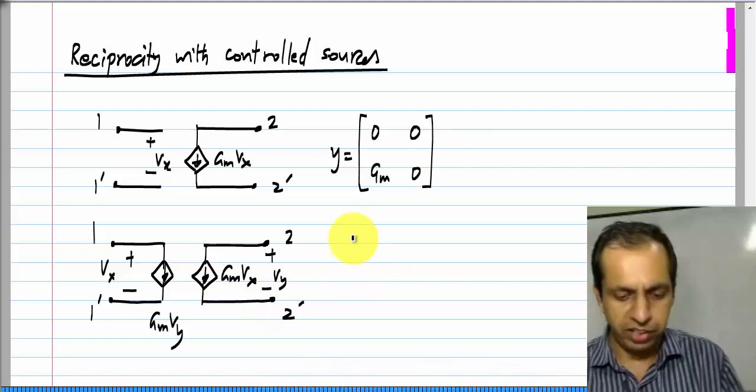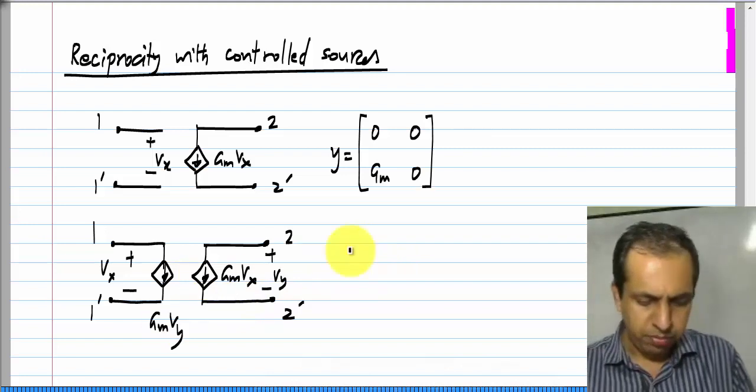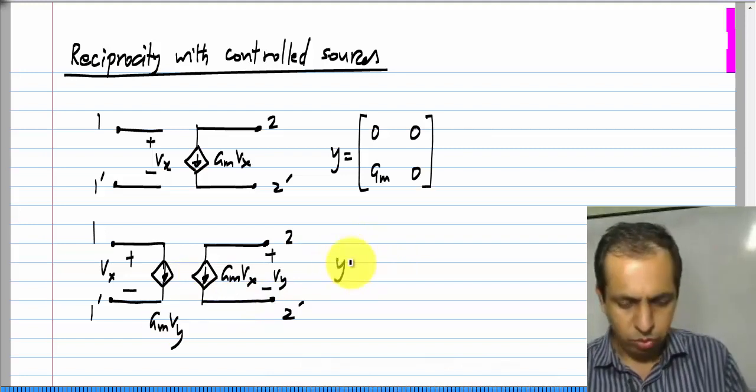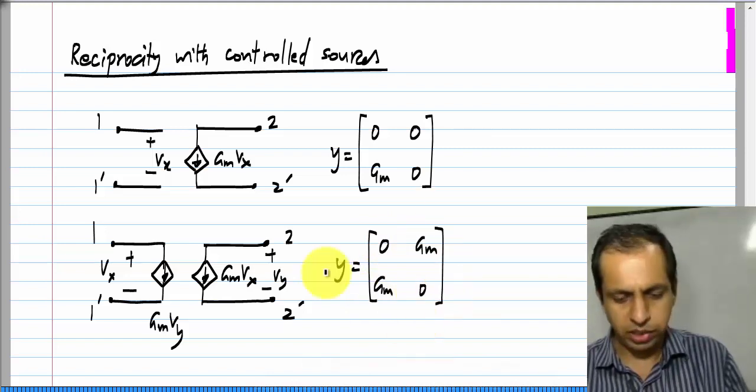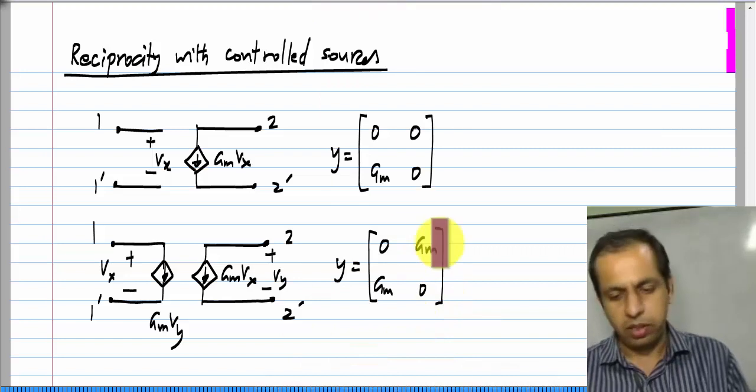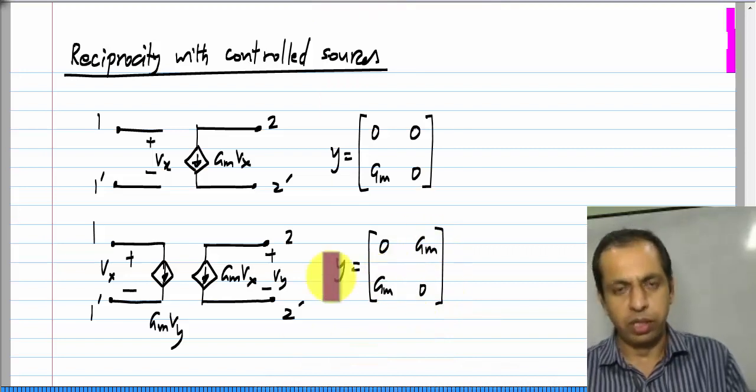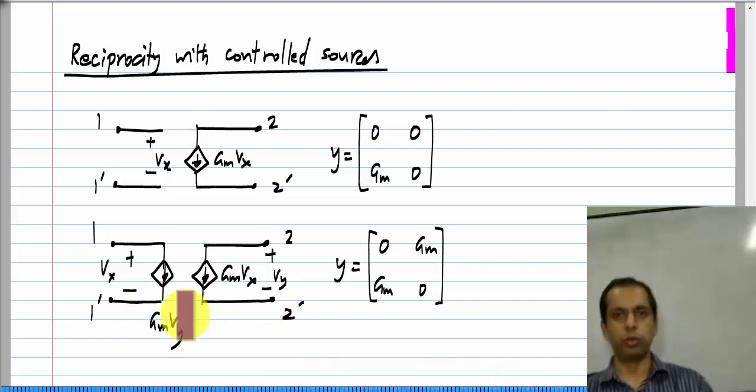I am not going to do that, but you can do that very easily. Y would be [0, Gm; Gm, 0]. Clearly Y12 equals Y21, and this is a reciprocal network that consists of controlled sources, and you can also have resistors and so on.